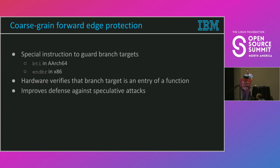This is pretty coarse-grained because an attacker can chain several executions of function entries and still find enough gadgets to compromise the system — for instance, passing a wrong argument to a function and then returning and going back. It is considered relatively weak protection and usually should be combined with back-edge protection as well.